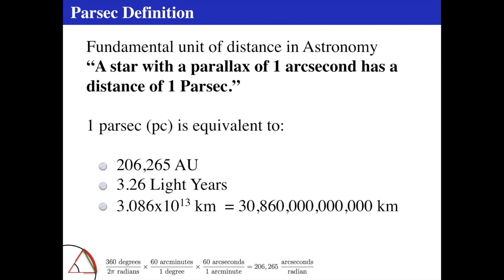Stars are on the order of about a parsec apart from each other. Some stars have large parallaxes if they're really close, and small parallaxes if they're really far. Sirius has a parallax of almost half an arc second and is about seven light years away.